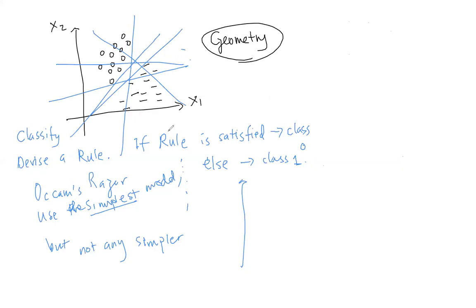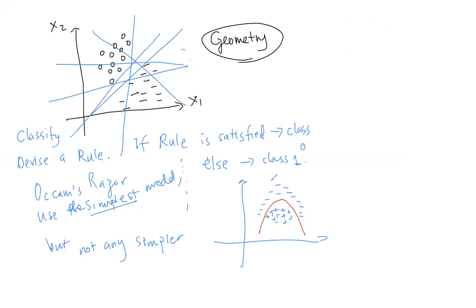In some cases your data might require a nonlinear boundary. For that kind of data, the simplest model is a quadratic rule rather than a linear one — a straight line will include some of the other class no matter how you cut. A quadratic rule will work perfectly in that case. That is what 'use the simplest model, but not any simpler' means.